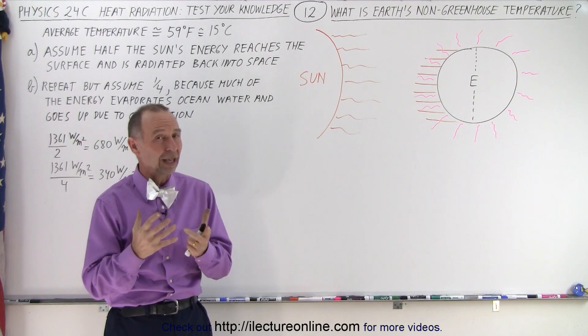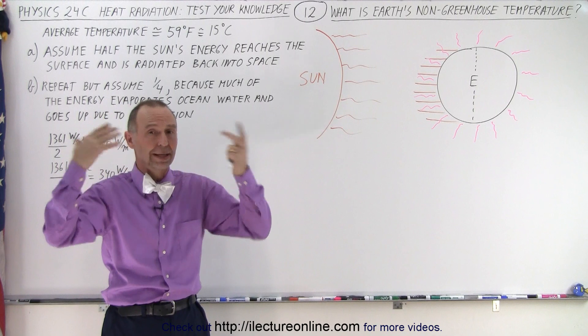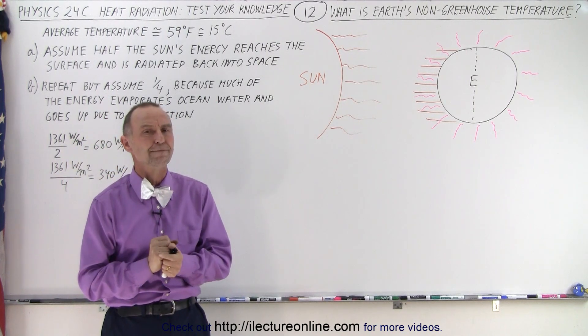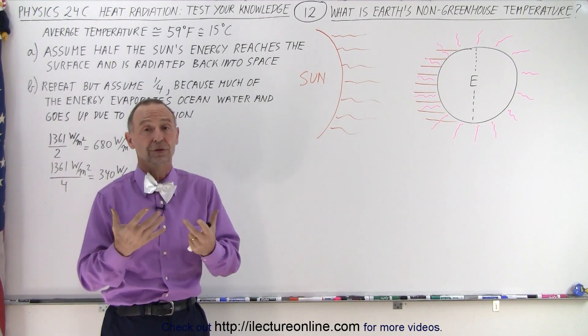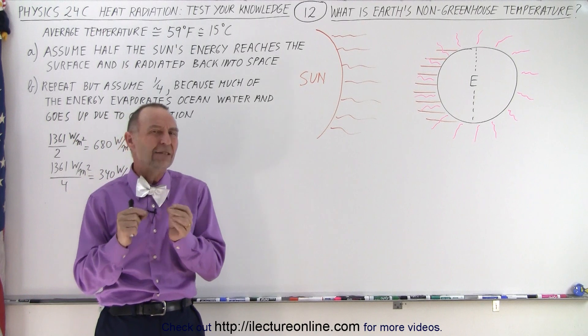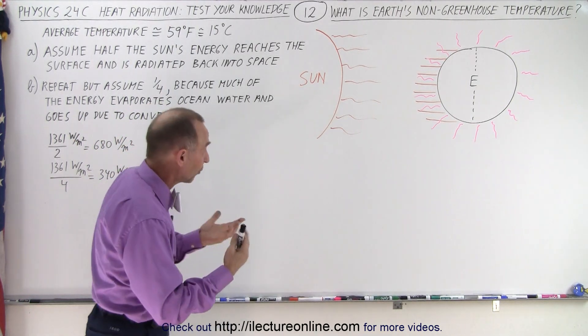Now if those greenhouse gases weren't there all that radiation would go right back into space unhindered and the temperature of the Earth would be a lot colder than it is today. So what would that temperature be of the Earth if those greenhouse gases weren't there? And of course it's not that easy of a calculation because we need to make some assumptions, but let's start with the basics.